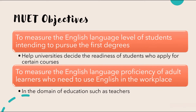So what are the MUET objectives? Firstly, it is to measure the English language level of students who intend to pursue first degrees in university. Before you can apply for any course, you would need to be of a certain level of language proficiency. The MUET test helps universities decide on the readiness of students who apply for certain courses — basically whether you are ready as a student for the courses offered.